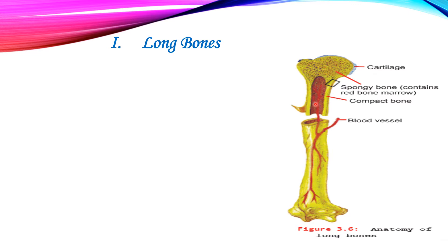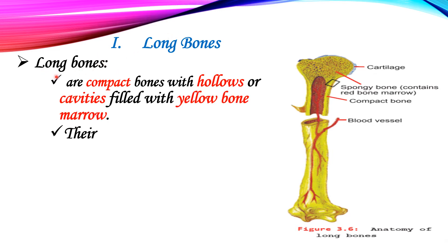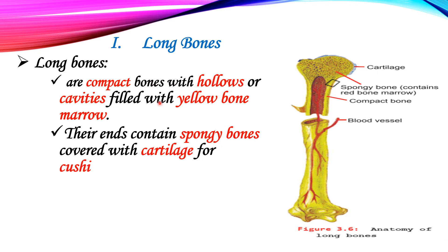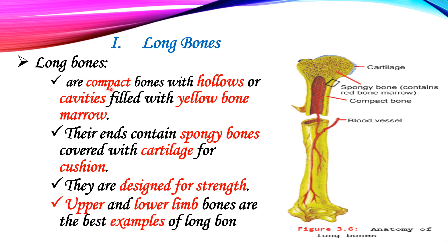The first type is long bones. Long bones are compact bones with hollows or cavities filled with yellow bone marrow. Here is an example of the anatomy of long bones.